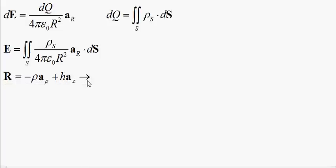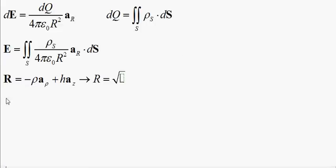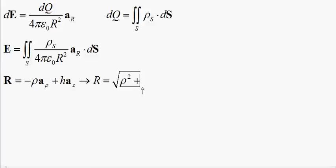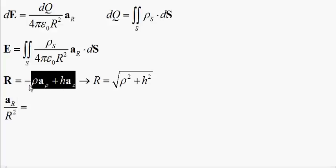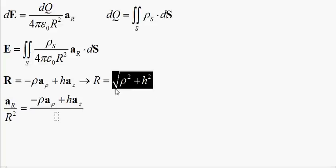Consequently, our magnitude — non-bold R — is going to be, by the Pythagorean theorem, the square root of rho squared plus H squared. So if we have A sub R over R squared, that's going to be this vector divided by R squared.